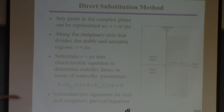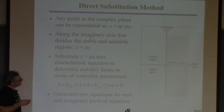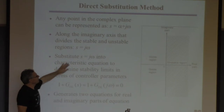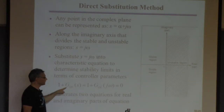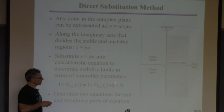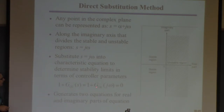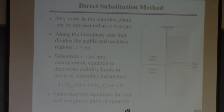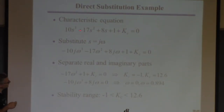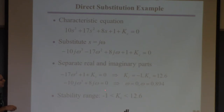Back to direct substitution. The imaginary axis s = jω divides unstable from stable regions. I substitute s = jω into the characteristic equation. I'll get an equation involving omega and Kc. Since imaginary terms can't cancel real terms, the real part must equal zero and the imaginary part must equal zero independently — giving two equations. I'll solve these simultaneously to find the critical Kc values and the corresponding omegas.